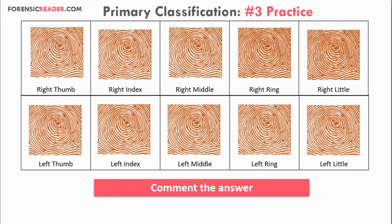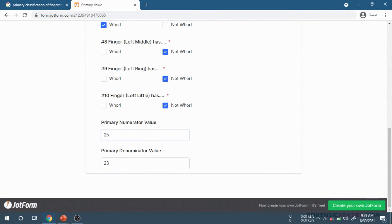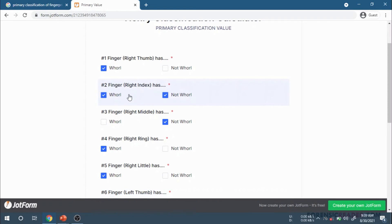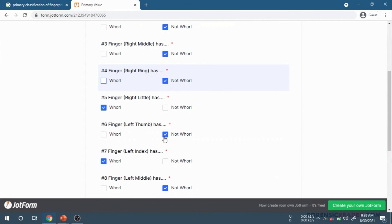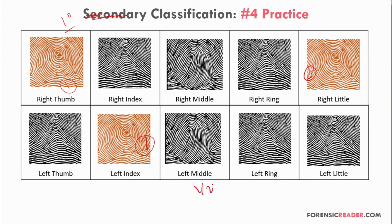Practice three: since all fingers are whorls, the primary classification value will be 32/32. Practice four: whorls appear at fingers one, five, and seven. Using the calculator, the primary classification value comes to be 1/23.